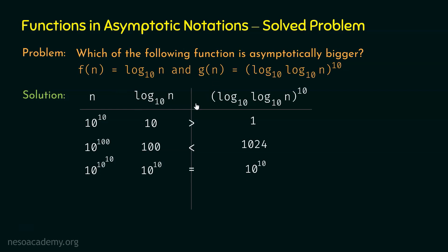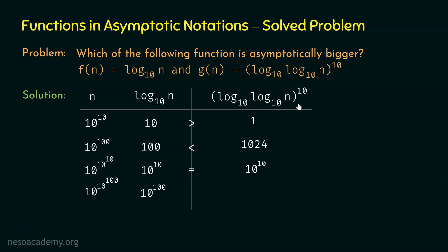It might be possible that f(n) surpasses g(n), so let's take a bigger value — 10^(10^100). Log(10^(10^100)) equals 10^100. For g(n), log n base 10 is replaced by 10^100, and we get log(10^100) base 10, which equals 100.